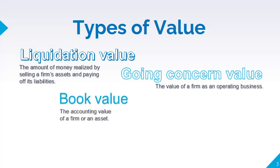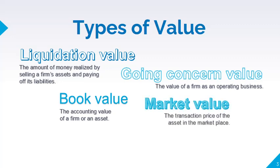Book value refers to accounting value and usually reflects the historical price of an asset or a firm. Market value is the price at which a seller or a buyer can transact in the marketplace, and it is mainly determined by demand and supply.